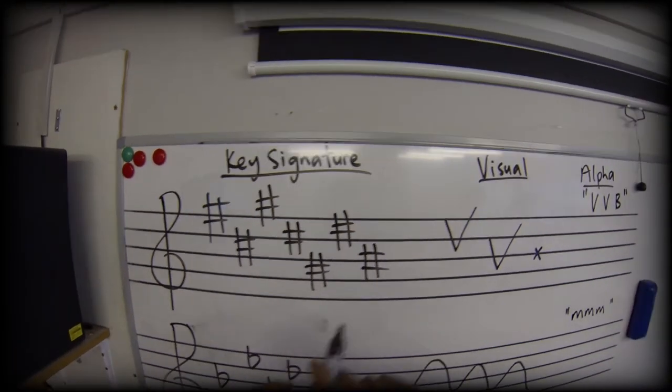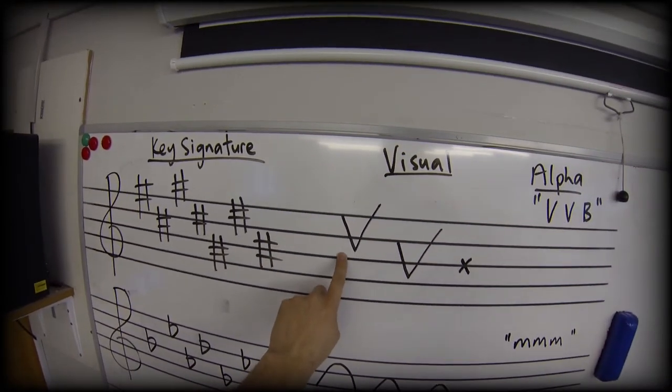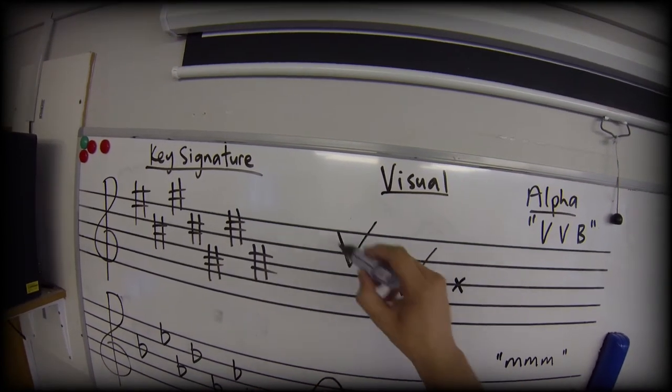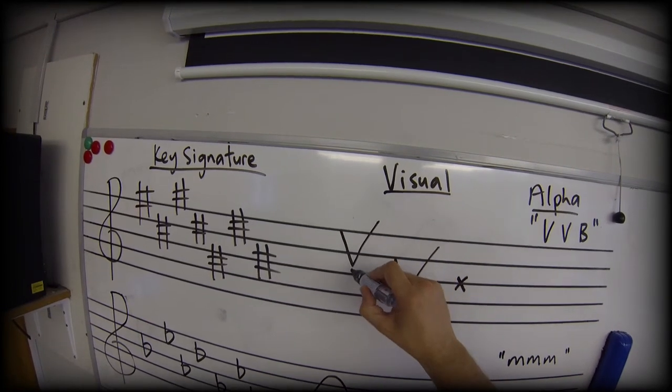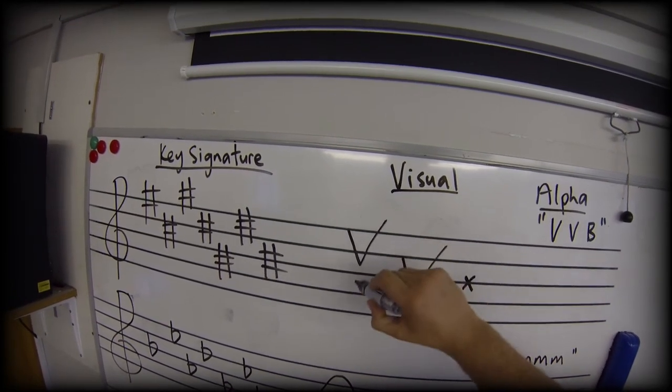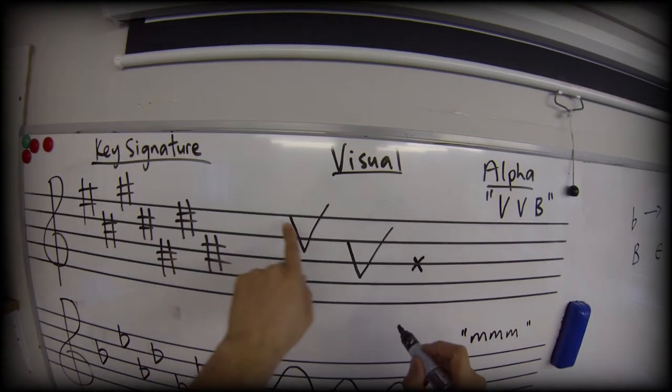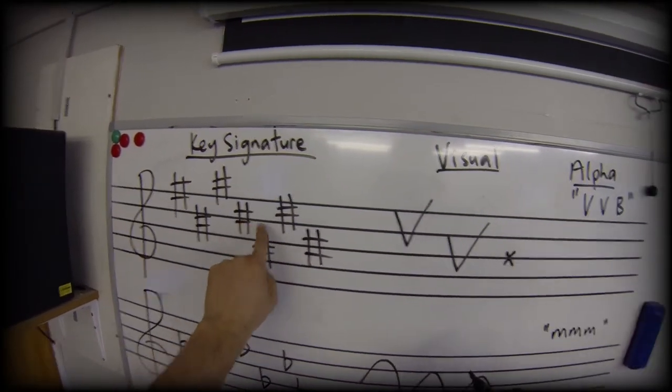So let's have a look. We've got an F sharp, down to C sharp, then up to G. And do you notice the triangle works a little bit like a tick in terms of the second of the two lines is the longer one.